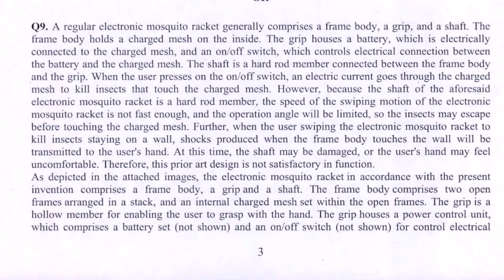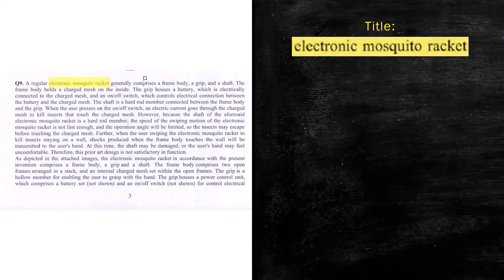The invention is about an electronic mosquito racket with improved design. More specifically, the invention provides a shaft which is flexible. The title is right there in the first line itself: 'Electronic Mosquito Racket.' This is your title.